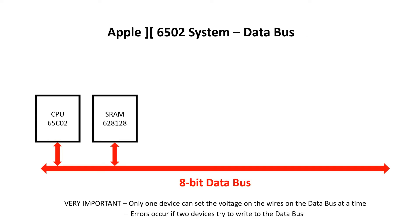Static RAM will basically keep its data as long as power is applied to the chip. The CPU and the SRAM are both connected to the data bus, and just a reminder that only one of these devices can set the voltage on these wires at any given point in time.